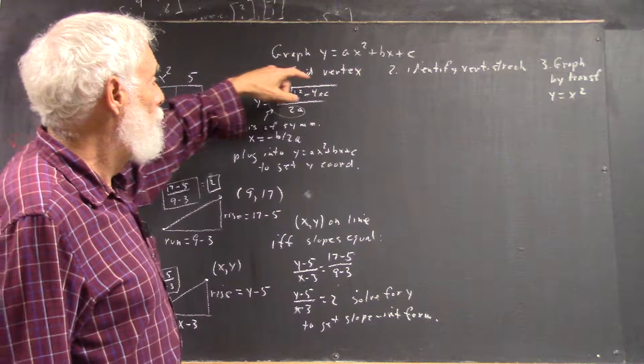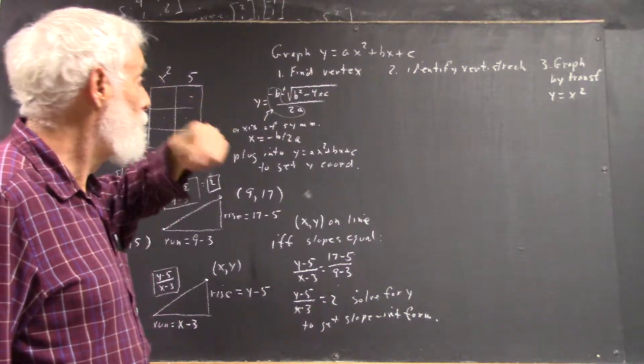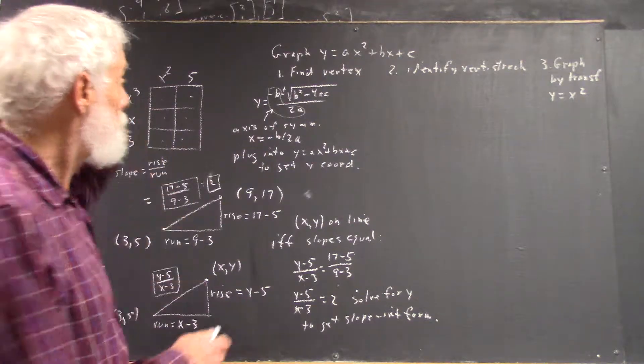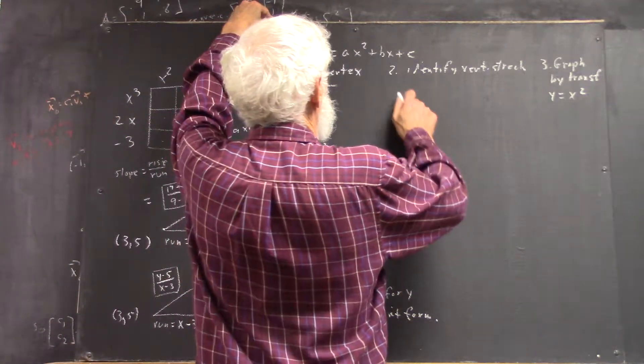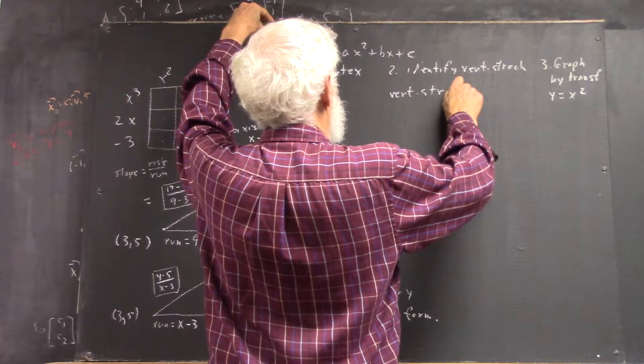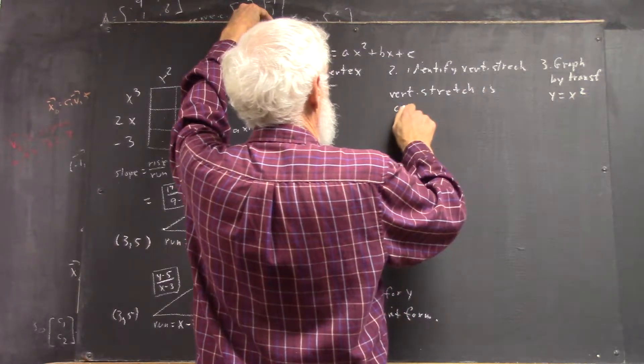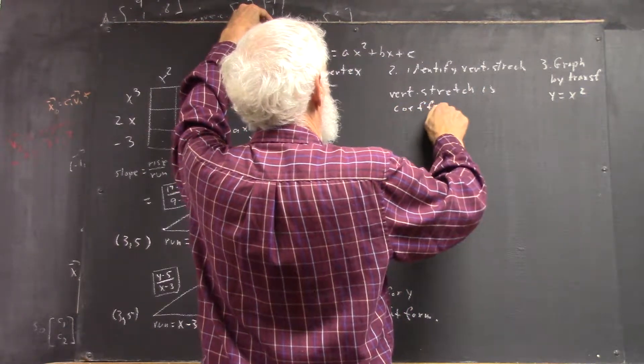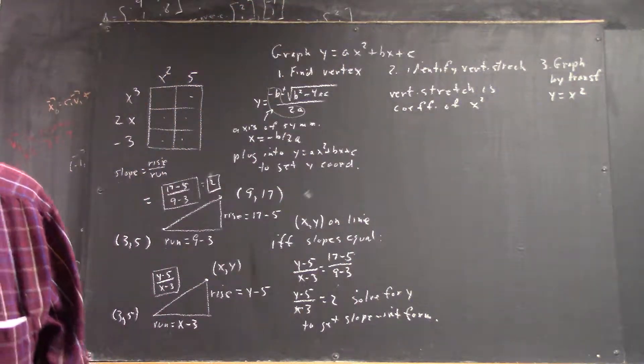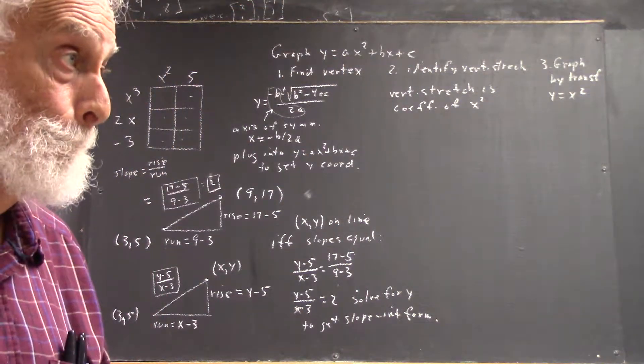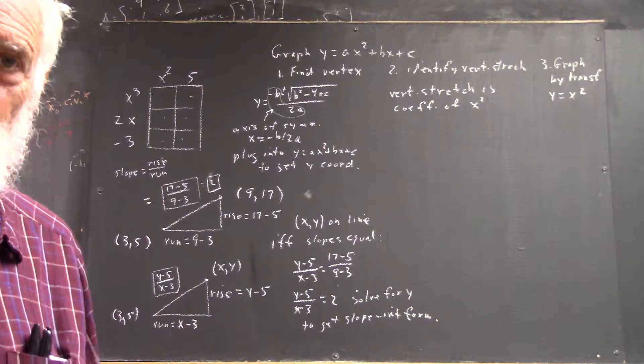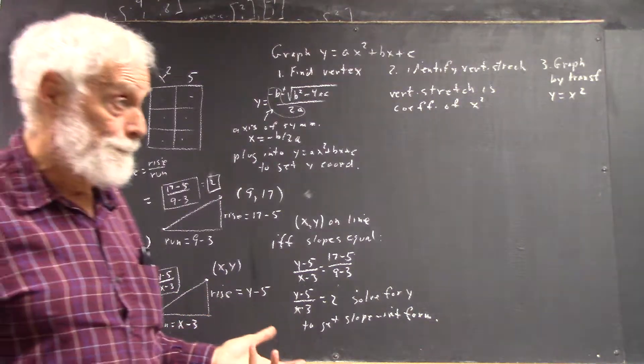So now that we know the vertex, we identify the vertical stretch. Vertical stretch is a coefficient of x squared, right? And we've explained that, so hopefully when you do that, you can explain why.